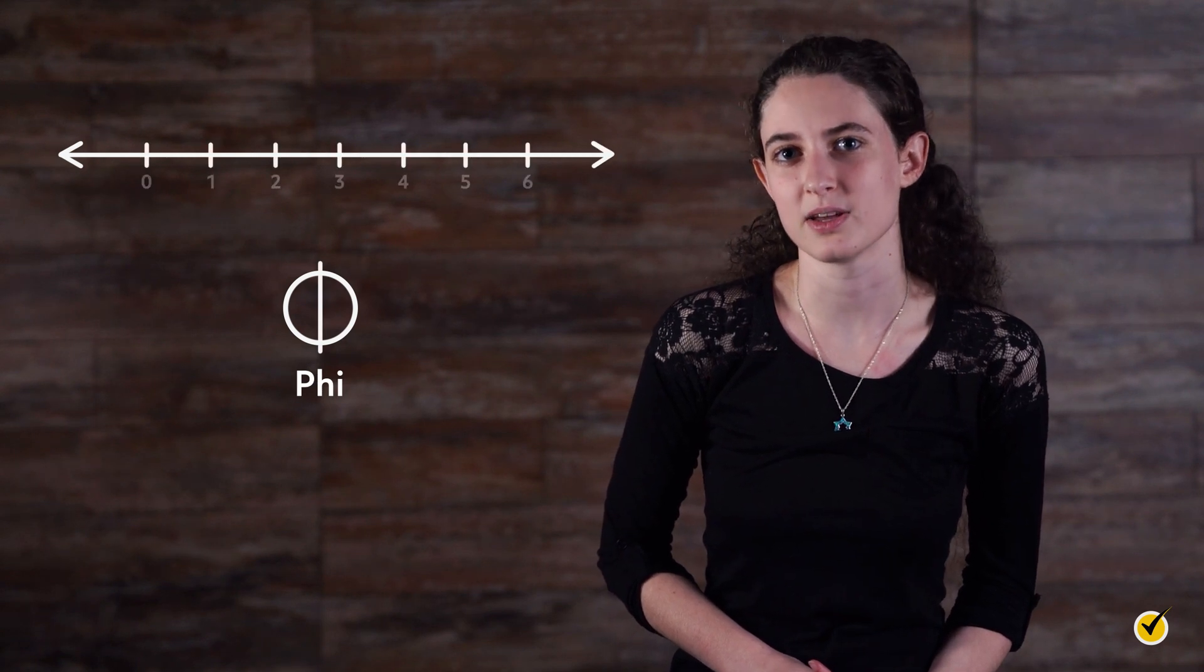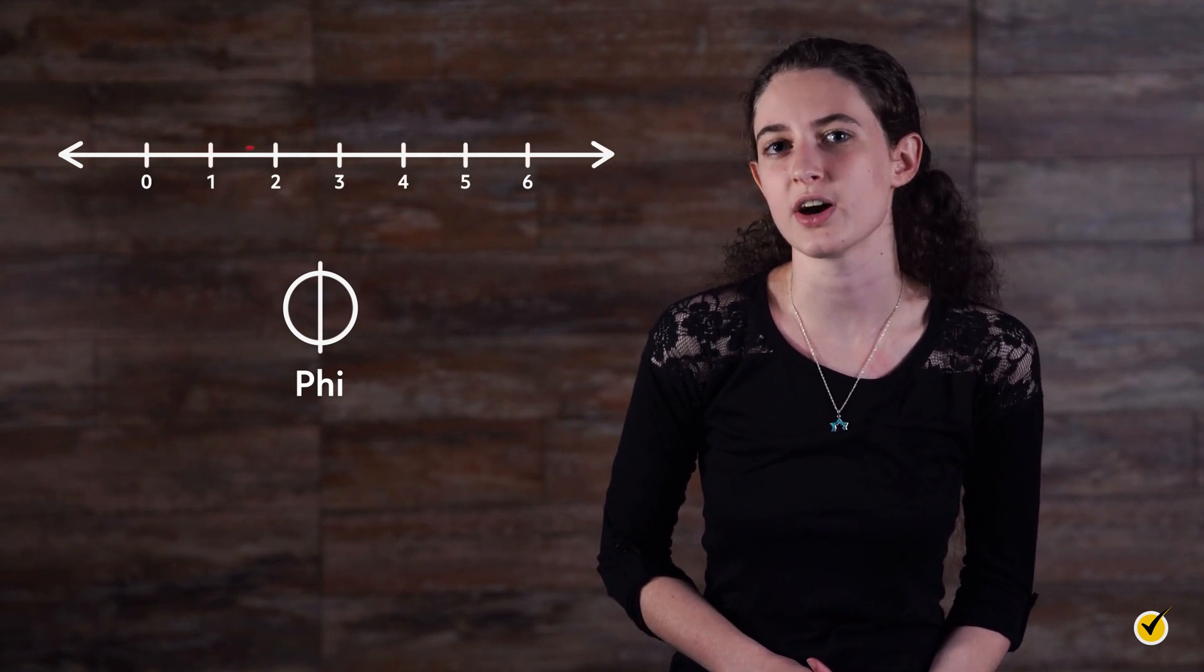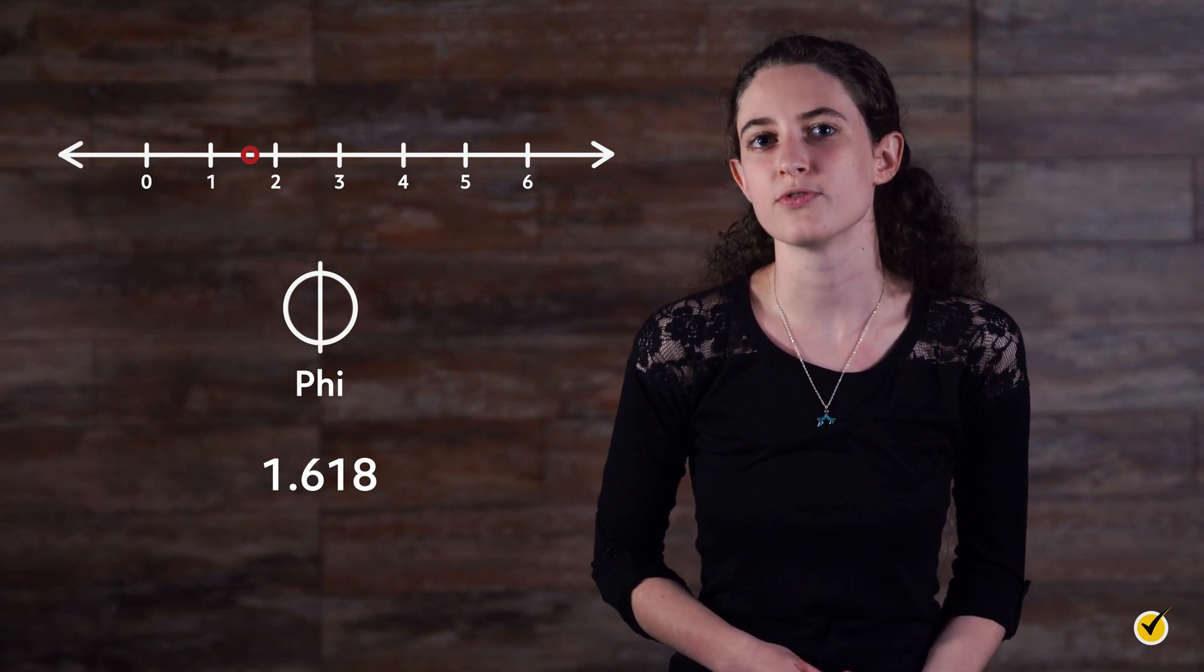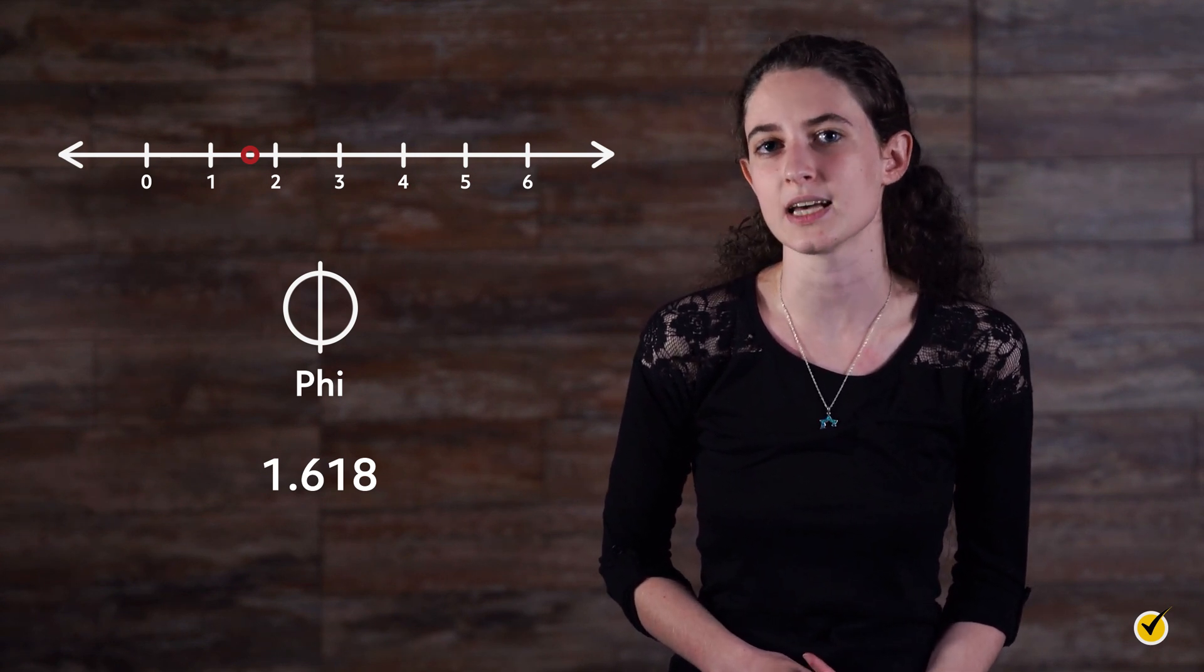Phi is another irrational number that can at best be mathematically approximated. The general estimation is the value 1.618, which is used in visual arts, architecture, and design applications.